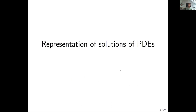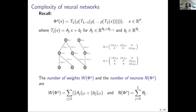Let's start reasonably simple by understanding how we can represent solutions of PDEs. We need to fix the complexity of a network, which is essentially the number of non-zero parameters — I call this W of the function, the number of non-zero entries of the weights A's and biases B's. An alternative is to count the number of neurons. Both are fine and give often similar results. This is a reasonable but not uniquely well-defined notion of complexity — you can think of it as the smallest representation.